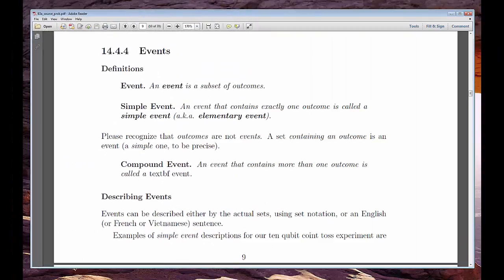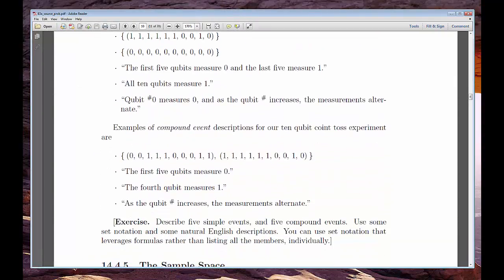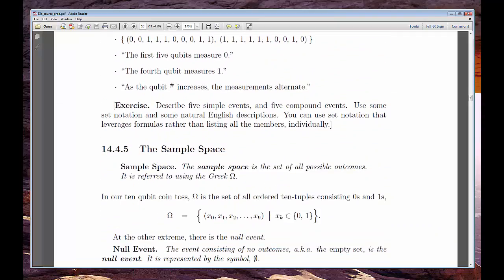So we develop the theory of probability by defining some non-numeric terms – sample space, outcomes, events, and some operations – unions, intersections, complements.